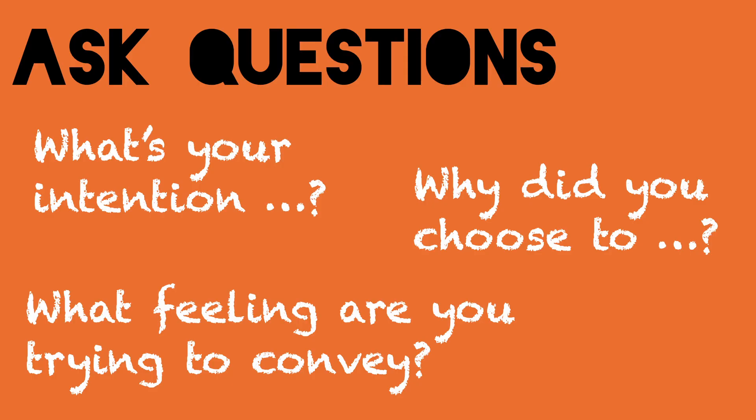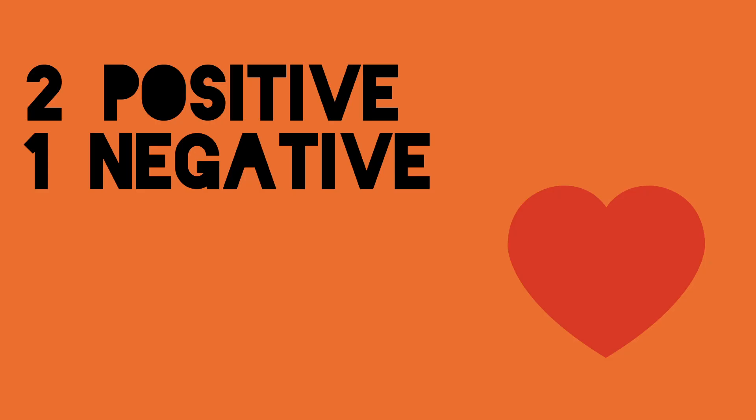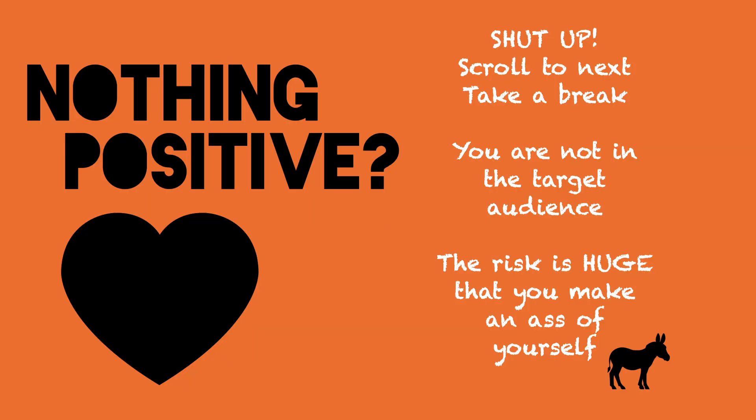Ask questions — maybe you haven't understood the meaning of the picture. What's your intention? Why did you choose to? What feeling are you trying to convey? Before you say something about the picture, you need to have at least two things in the picture that you like for every one thing that you think needs improvement. If you haven't got anything positive to say, scroll to next and take a break — you're probably not the target audience. The risk is huge that you make an ass of yourself.